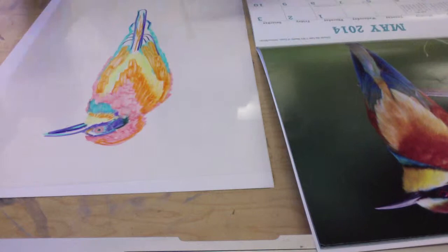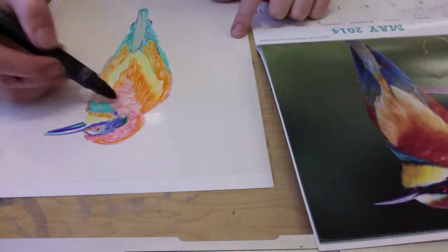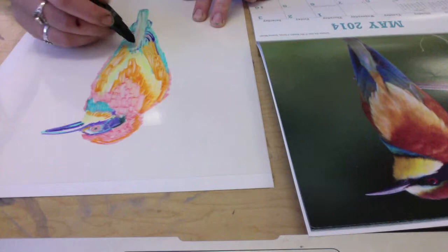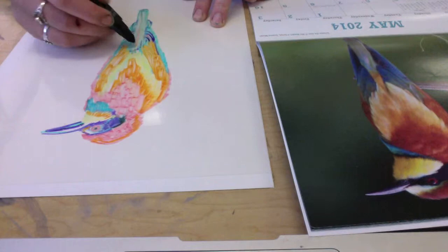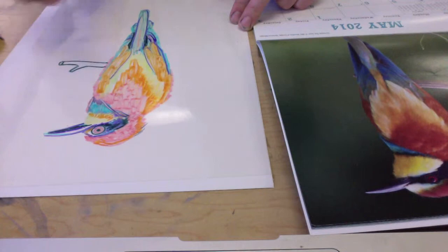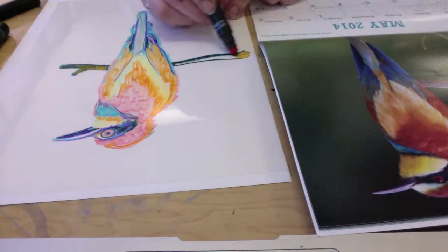So now I'm drawing in the tail feathers of the bird. And all the little tiny details come afterwards. And I'm going to draw kind of an imaginary stick that the bird is sitting on. And you can add things like that too.